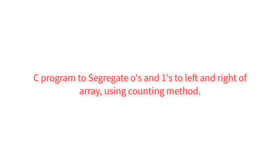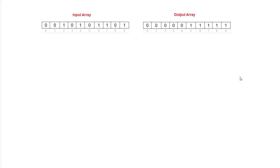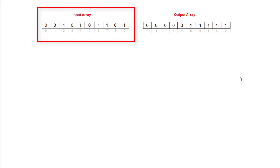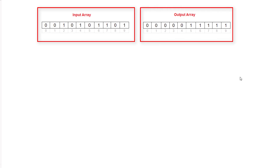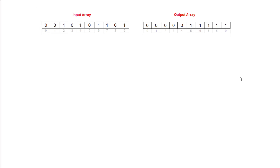Write a C program to segregate zeros and ones to the left and right of the array using the counting method — that is, zeros to the left of the array and ones to the right. For example, if this is the input array with all zeros and ones, all the zeros should be arranged to the left and all the ones to the right. We can also use a swapping method, which we will see in the upcoming video.